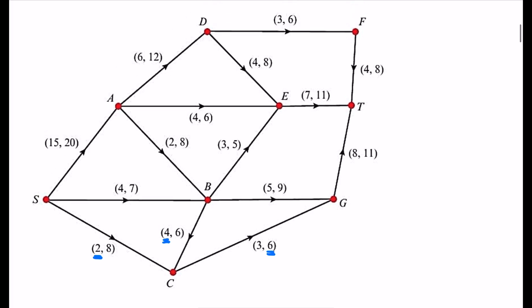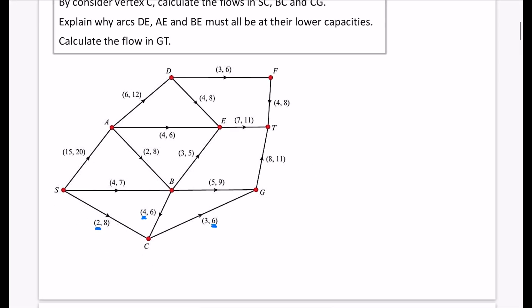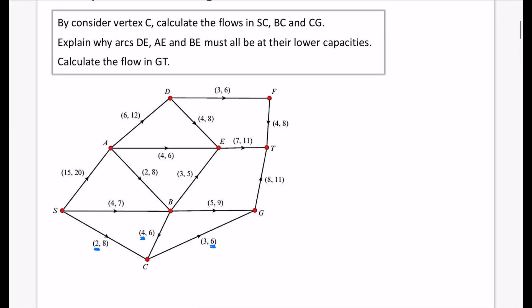I'll annotate these on the diagram. S→C is two, B→C is four, and C→G is six — that's the maximum because the minimums on the incoming arcs forced exactly six to flow in. Underlining values on the diagram helps visualize what's going on for subsequent parts.